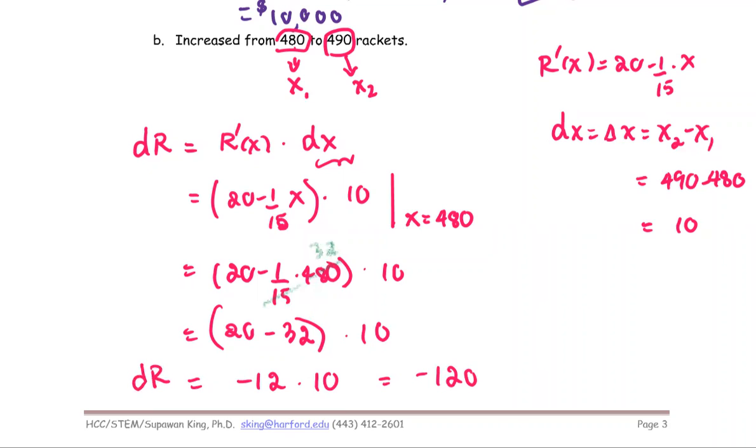The negative sign tells us about the loss in revenue, and the unit is in hundreds of dollars. So that means you're going to lose 120 and then two more zeros or $12,000 loss in revenue.